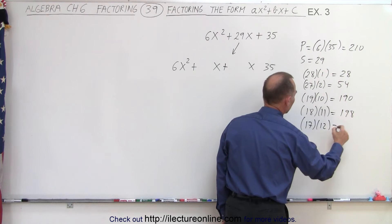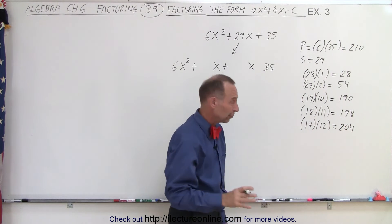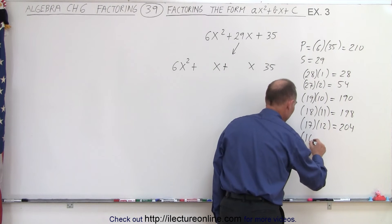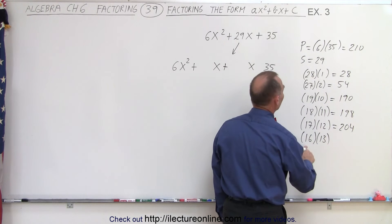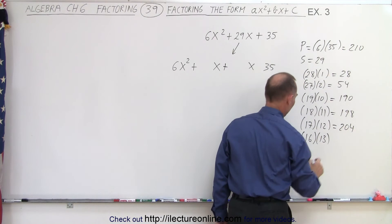That would be 204. We're getting really close. Maybe the next one is the right one. How about 16 and 13? I know that can't be right, because when I multiply 3 times 6, it doesn't end in a 0, so that's not the right number.